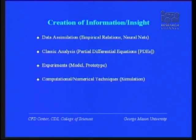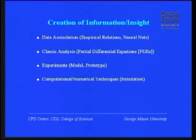So it is extremely important to know at an early stage if anything is going to work. One of the drivers of doing this computationally is that before you bend any tin, you have as much information about your product as possible. Now, how do we create information and insight? There are basically four ways: assimilate data from what has been done before, do classic analysis, do experiments with models or prototypes, or do computational — or numerical — techniques, also called virtual experiments.